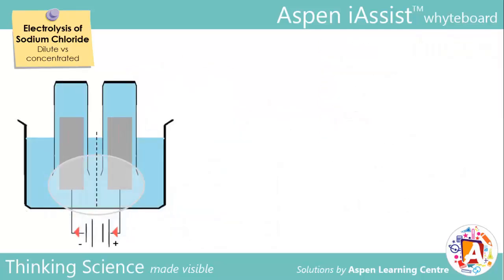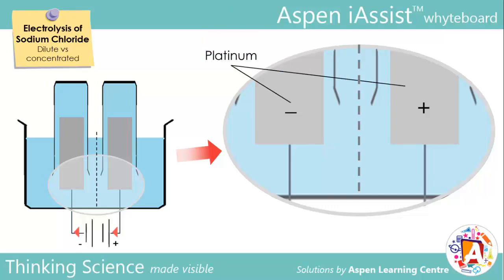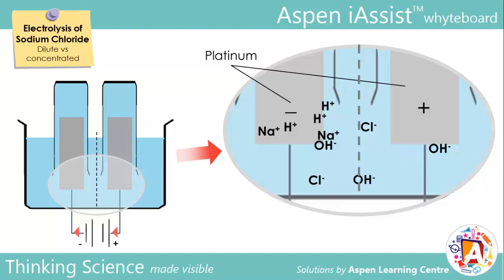Now, let's begin by looking at the electrolysis of dilute sodium chloride solution. When looking at an electrolytic cell, the first step is to identify the electrodes and ions present in the electrolyte. In this case, the electrodes are platinum rods. In the electrolyte, there are Na⁺ and Cl⁻ ions present, and also H⁺ and OH⁻ ions from the dissociation of water molecules. The cations are attracted towards the negatively charged cathode, while the anions will be attracted towards the positively charged anode.